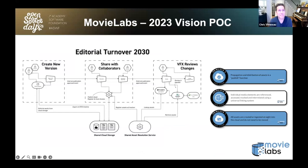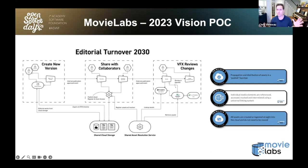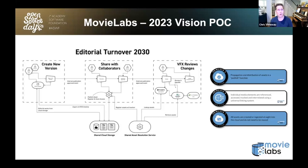MovieLabs is a think tank organization owned and operated by the major motion picture studios. They have a 2030 vision for production, which involves 10 principles on how movie and television production will be done before 2030. This year we've been building proof of concepts that take existing workflows and imagine them in that 2030 window. What we see here is an architectural diagram of an editorial turnover where, instead of moving media around, we imagine propagating a review as a published function, with items referenced by ID rather than file paths.